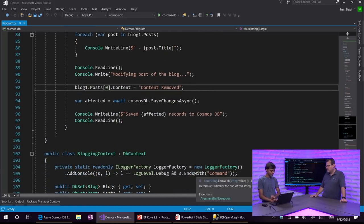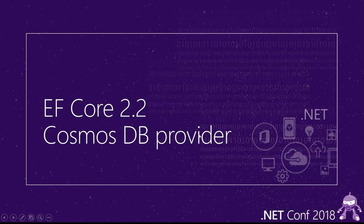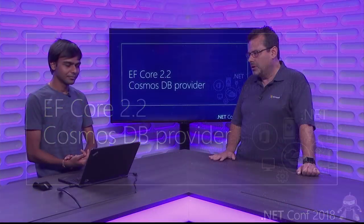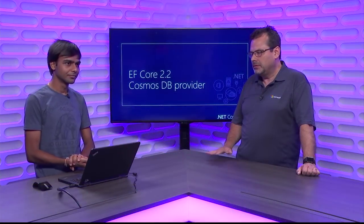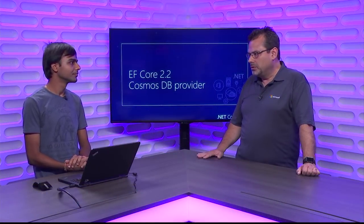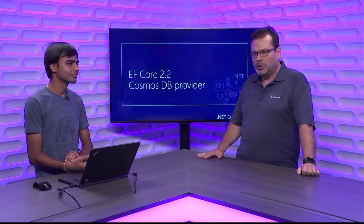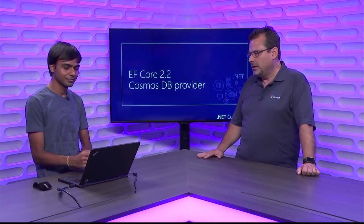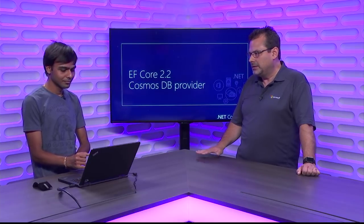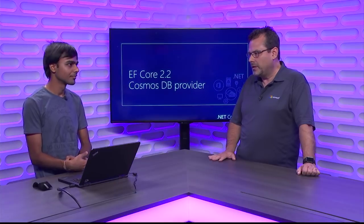Another limitation in preview 2 is that inheritance doesn't work very well in queries. If you issue a query for a base type, you may not get the derived type instances — just a bug in our query implementation. There is also something we really want to do, related to what we talked about with ownership: we want to embed owned entities in the same JSON payload, which we haven't implemented yet.